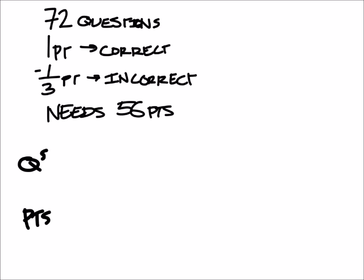So here's what I'm going to do. I'm going to let the questions that she gets correct be my X. That's the number of correct questions. And the number of incorrect questions will be my Y.